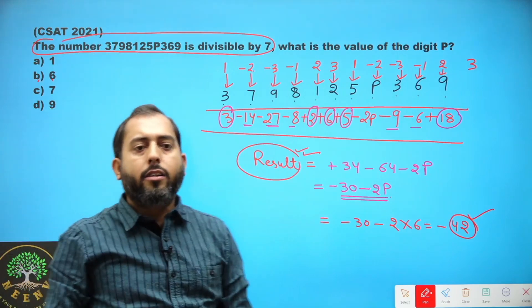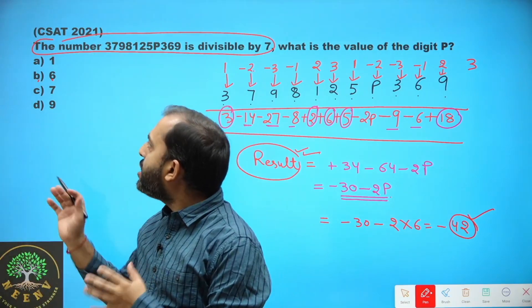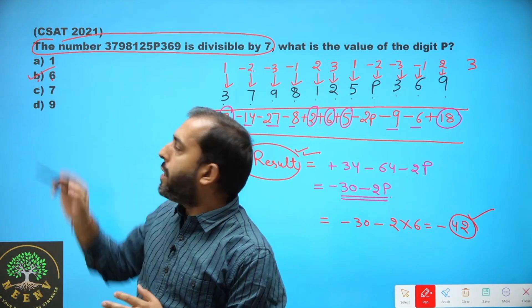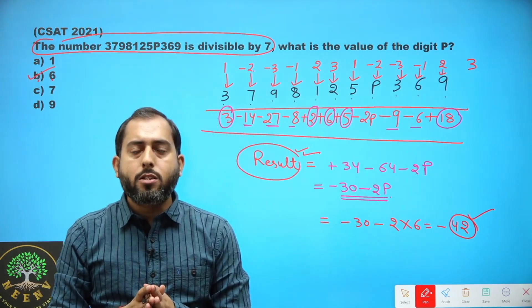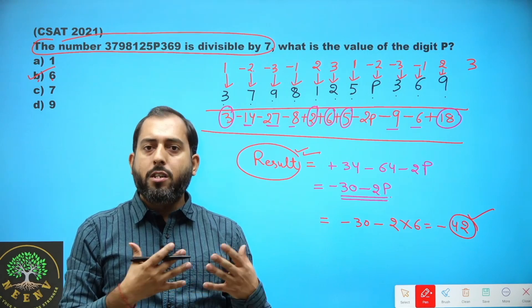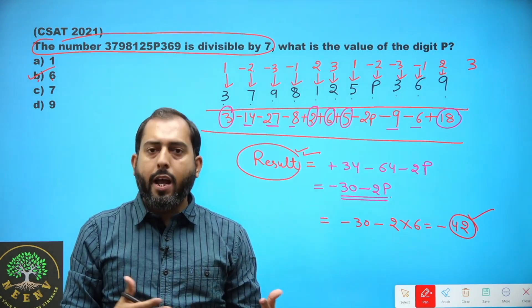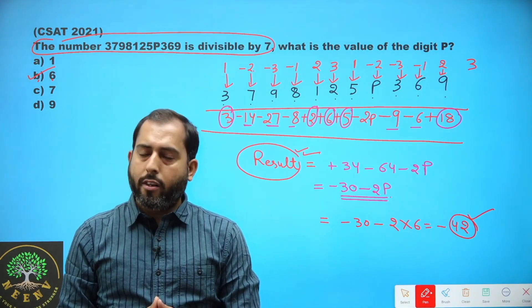The right answer is P equals 6. I hope you have understood the divisibility rule of 7 properly and this question is clear to you. Thank you.